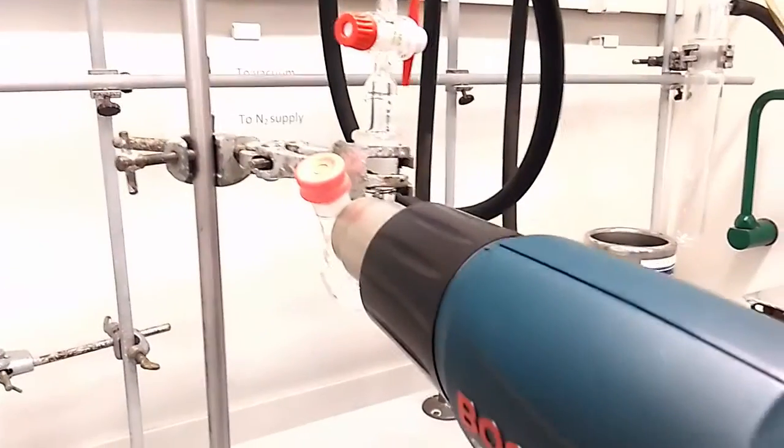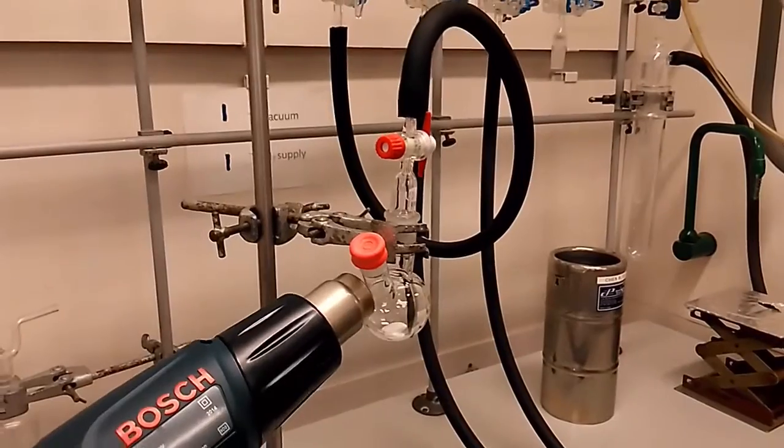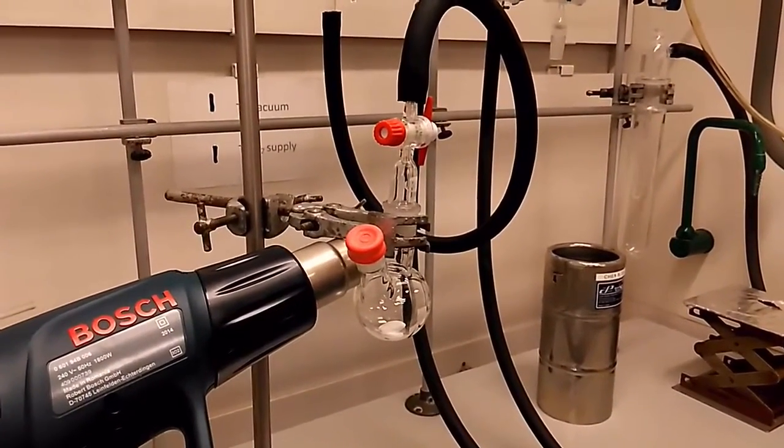So in this process under vacuum, the water will be turned into vapor. Any solvents will be vaporized and goes up into the Schlenk line away from the system to the vacuum.